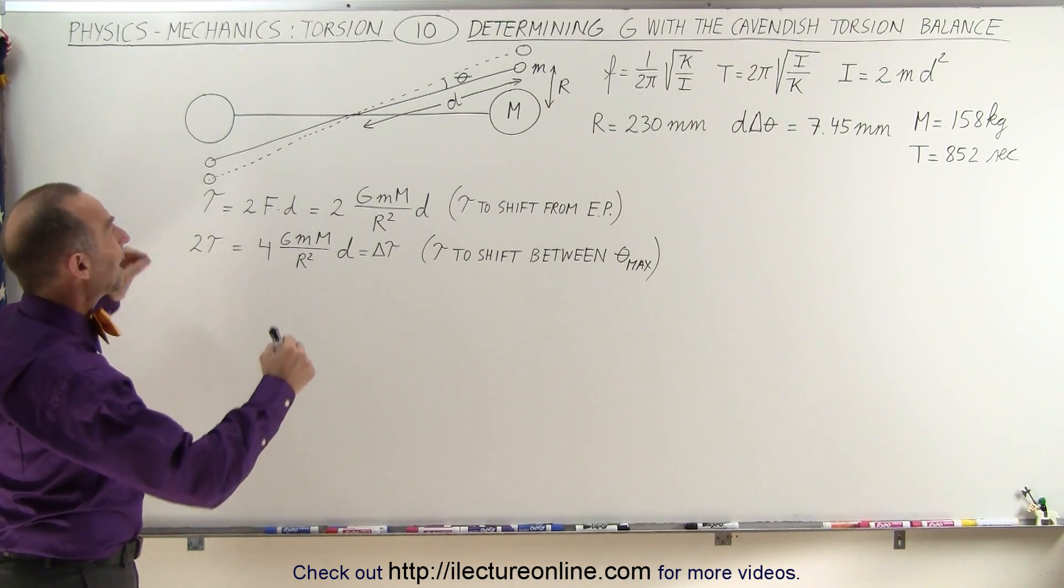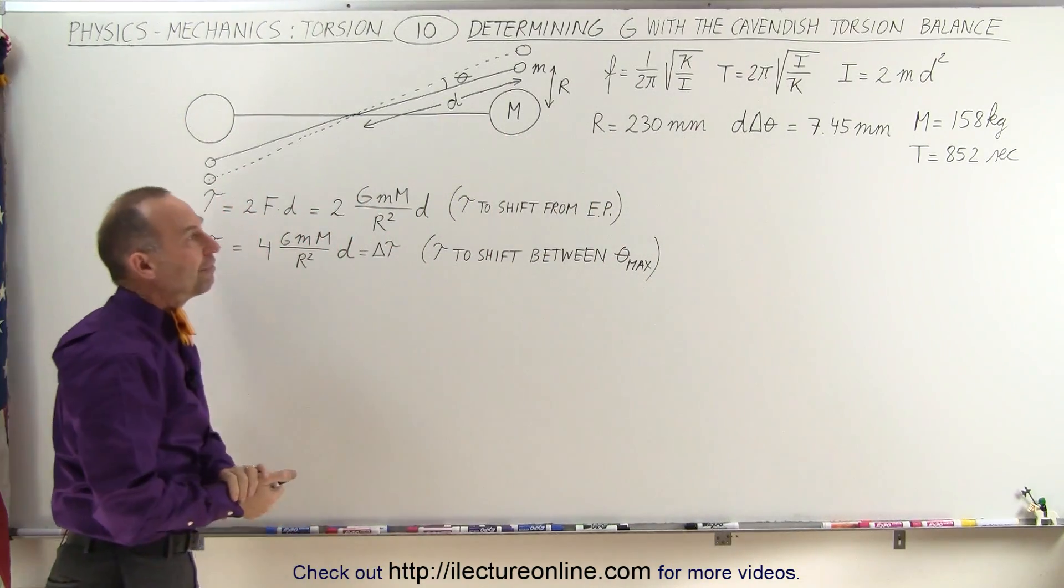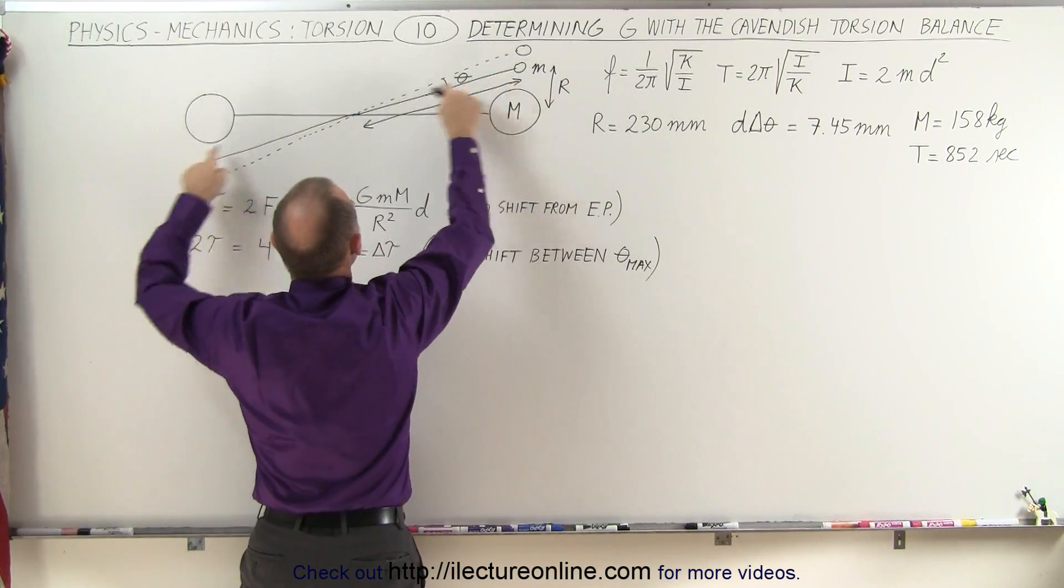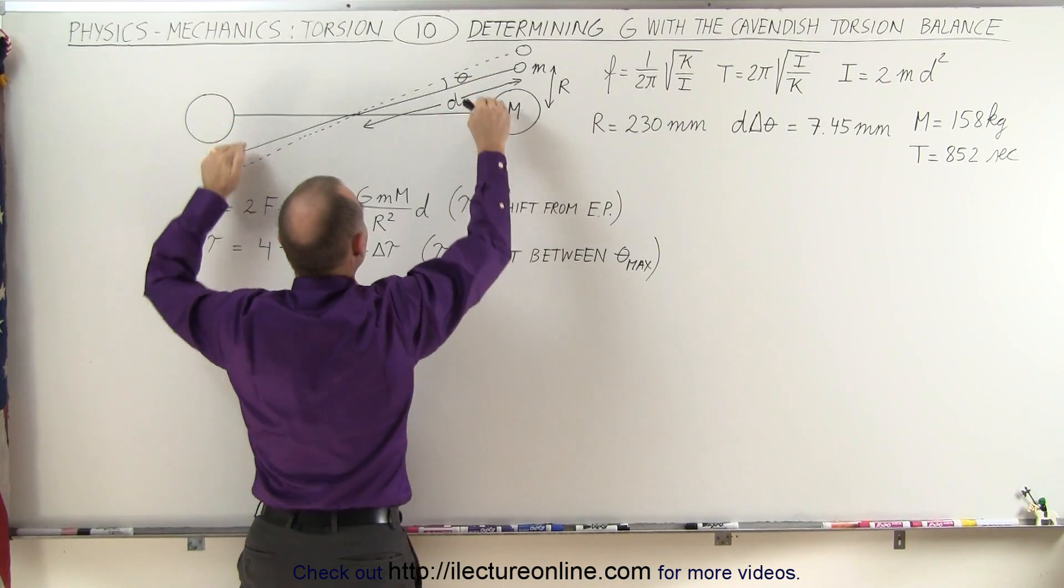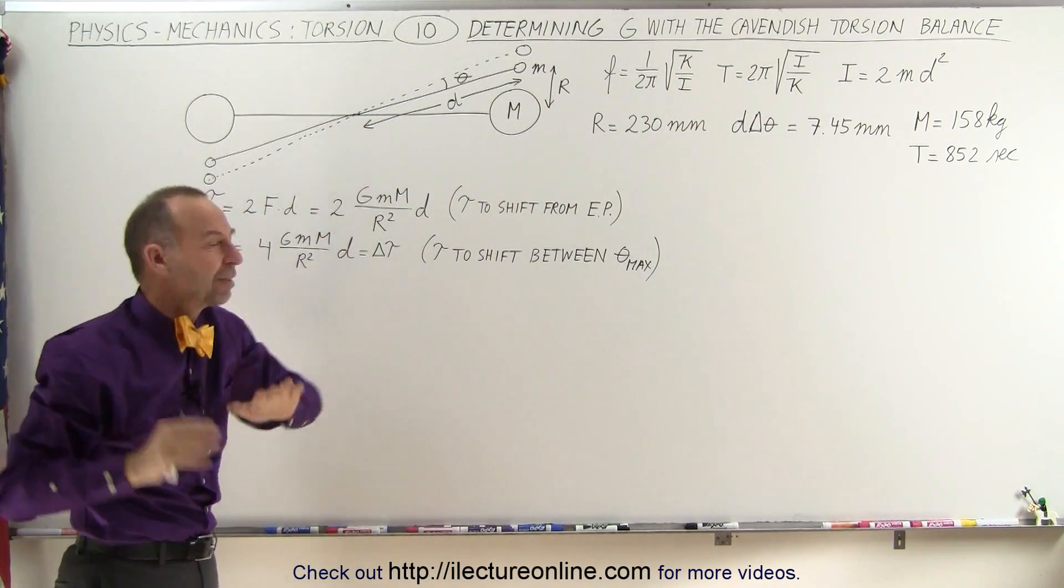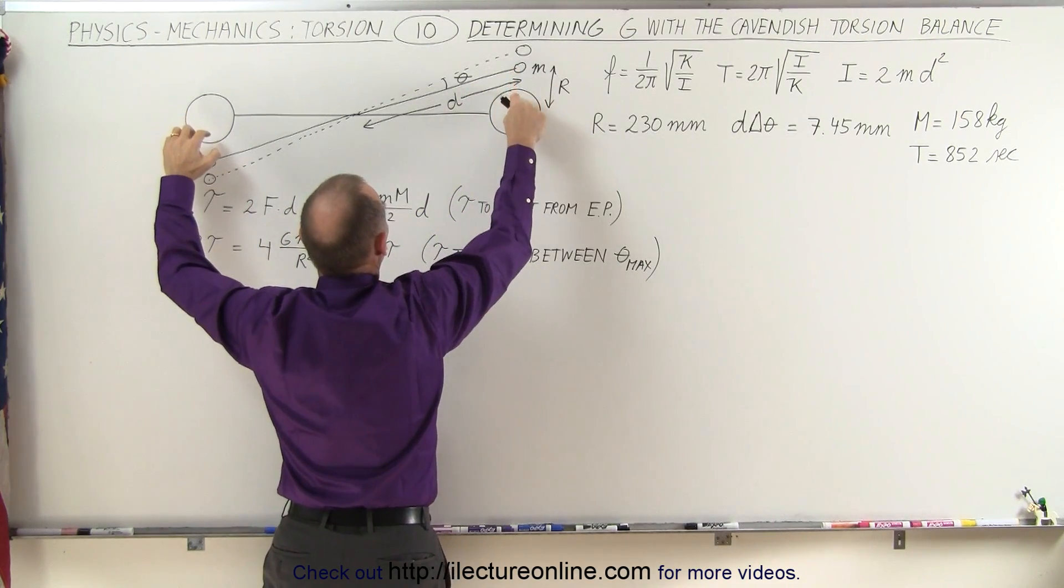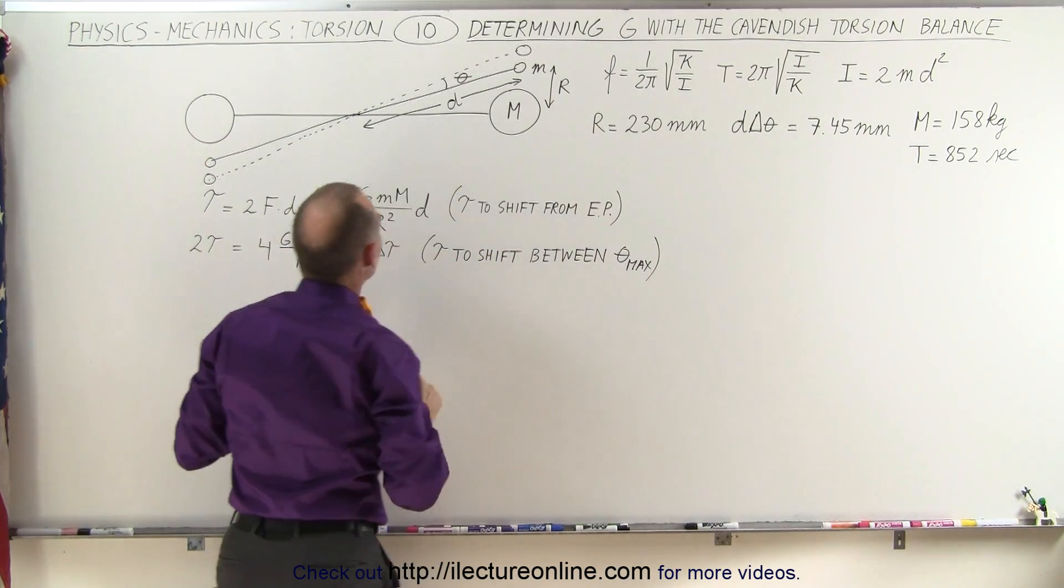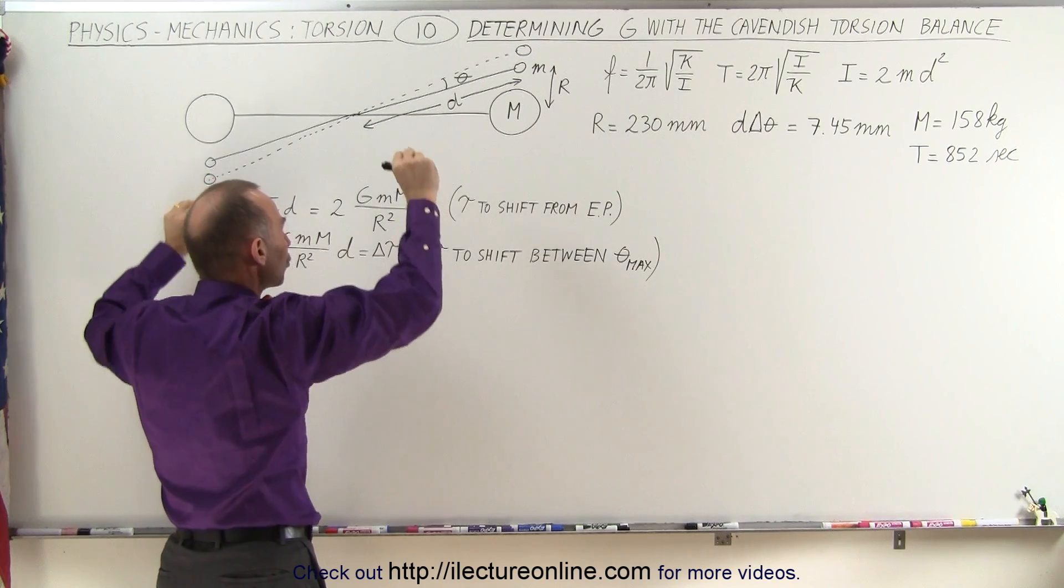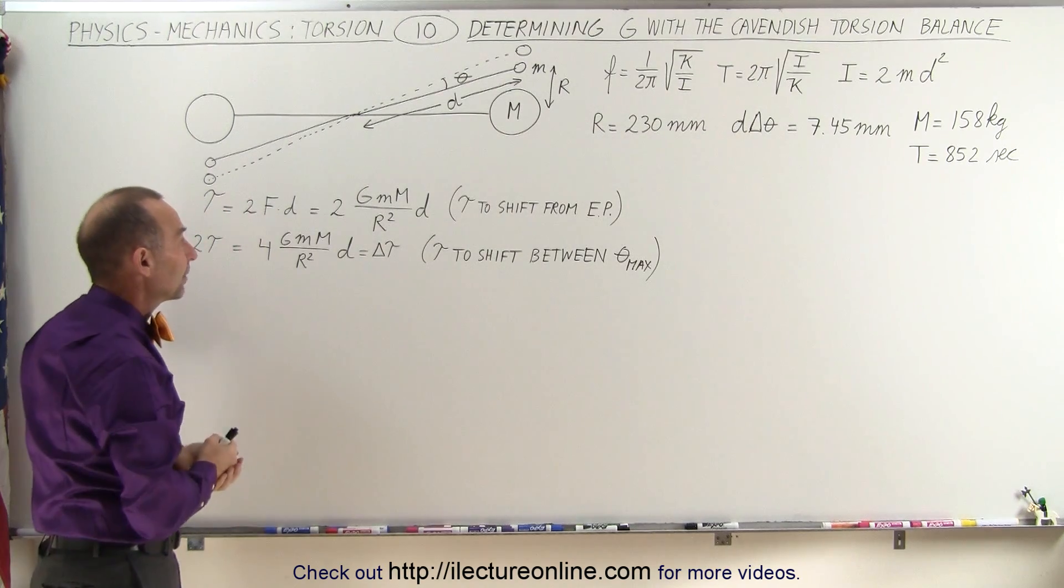He put together a pendulum where there were two large masses, each of them a mass of 158 kilograms, and next to that he placed two very small masses on a balance that would then be able to move back and forth, suspended to the ceiling. We basically have a bird's eye view on that. The force of gravity would attract the small mass to the large mass on both sides. Once he has set this in motion you would have torsional motion going back and forth, and based upon the period we should be able to calculate G. Let's see how we did that.